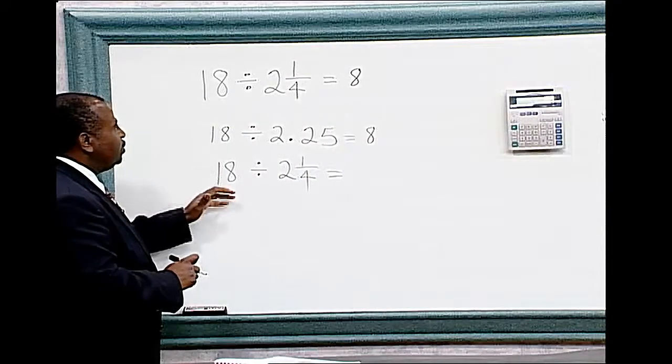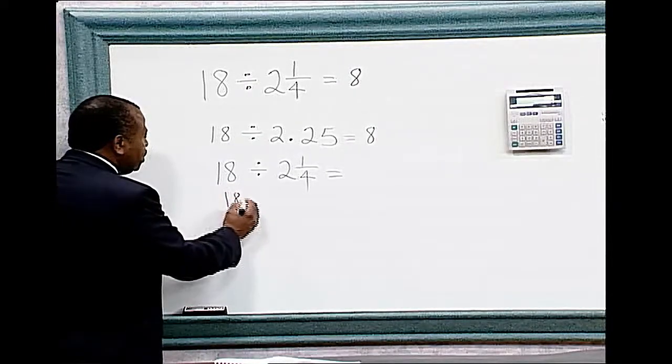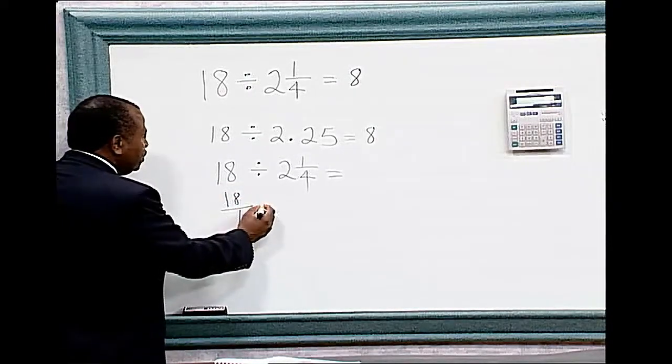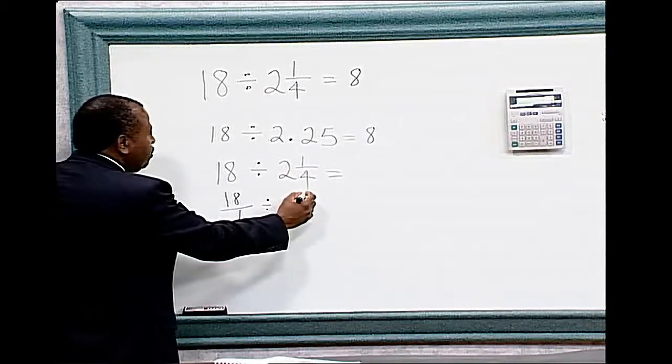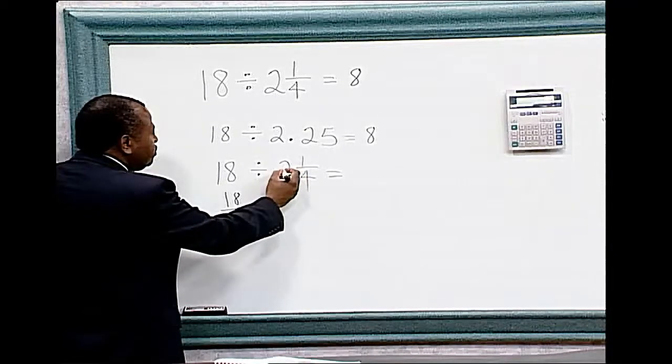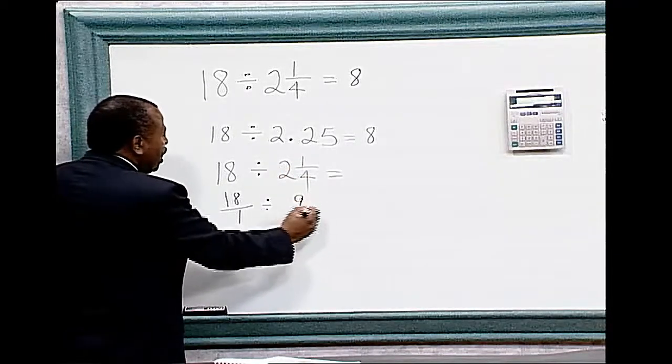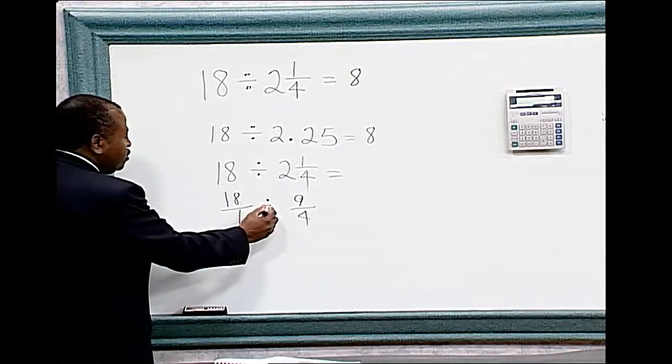18, the denominator for 18 is 1, divided by 2 and 1/4. As a mixed number, we're going to change it to an improper fraction by multiplying 4 times 2 is 8, plus 1, equals 9 over 4. The next step is to change division to multiplication.